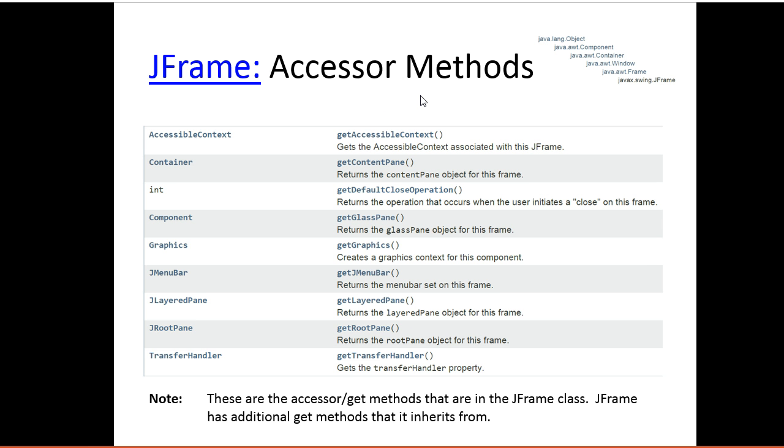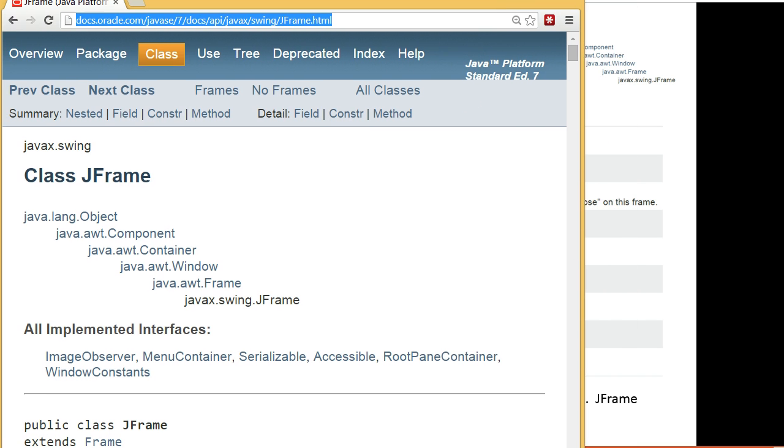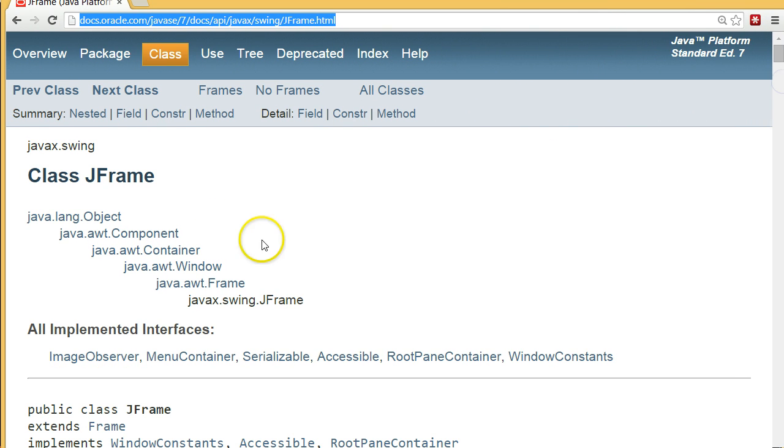It's important to note that these are the accessor and get methods that are in the JFrame class. It actually has additional get methods that are inherited from its super classes. And on the right hand side here, we have the hierarchy. Now this again is a little more complex than what we want to get into right now. But for those of you who are interested, it's important to recognize how do you read this documentation? This is the online documentation with the JFrame class. This defines the hierarchy.